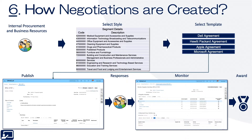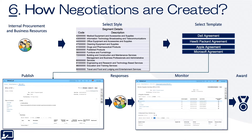Sixth topic: how negotiations are created. Negotiations are roughly created in six or so steps. First, you select a style. A style refers to the type — think of it as the cover page instructions for what needs to occur. For simple needs it might be good services, but for complex processes like a public works project requiring a fund authorization memo, you might need a different style.